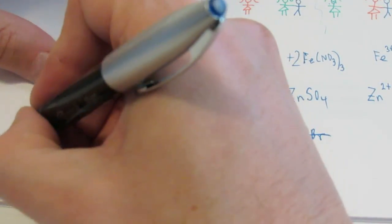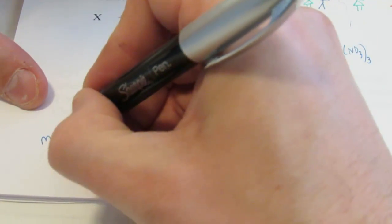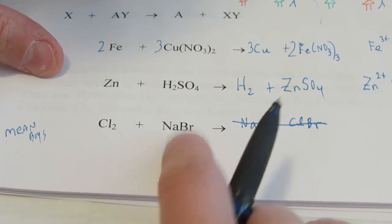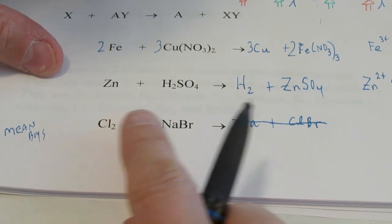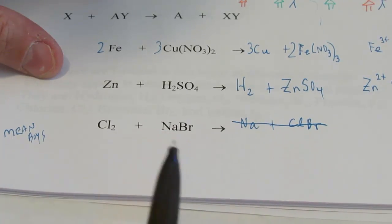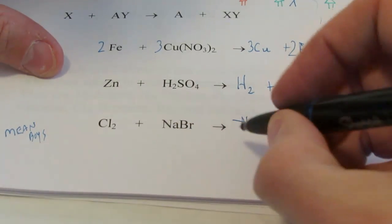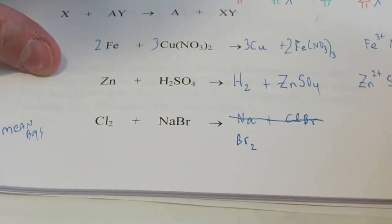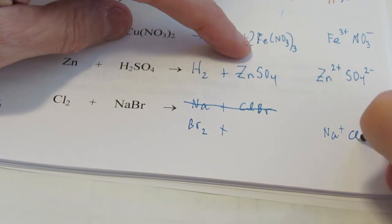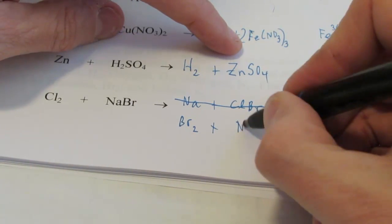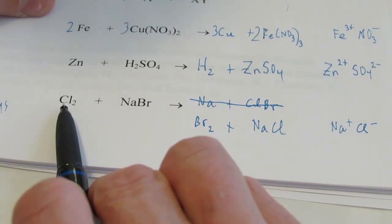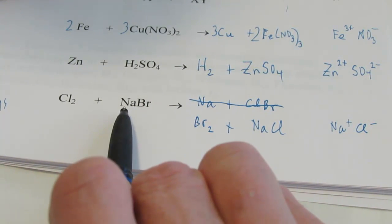In this case, we have mean boys. That's what we're going to call it. This time, chlorine and bromine switch positions. Think about why. They're both in group 17. They're both negative 1 when they form an ion. Sodium, of course, is positive 1. So bromine is the one by itself, Br2, it's a diatomic element. And sodium, Na plus, will get together with chlorine. It's in group 17, Cl negative, and we form NaCl.